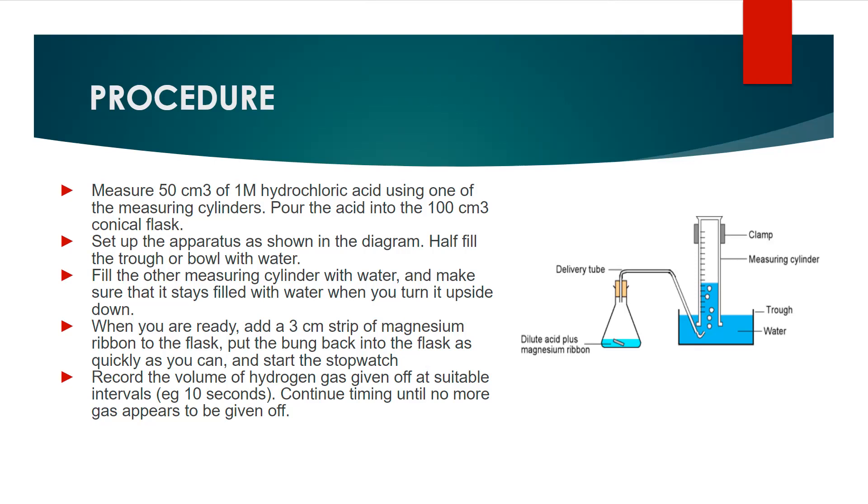When you are ready, add a 3 cm strip of magnesium ribbon to the flask, put the bung back into the flask as quickly as you can, and start the stopwatch. Record the volume of hydrogen gas given off at suitable intervals.